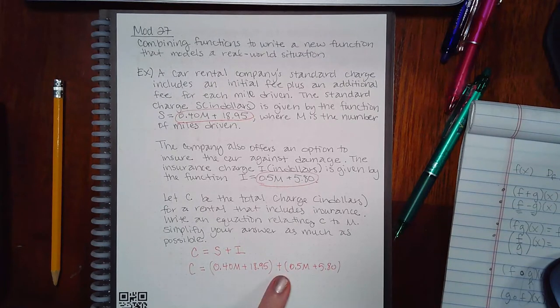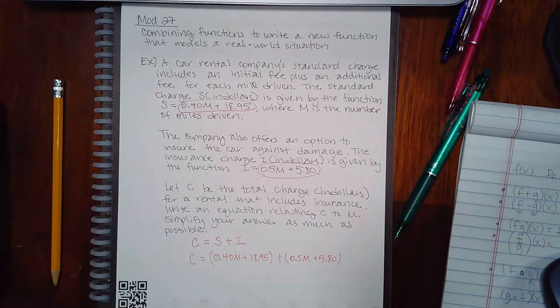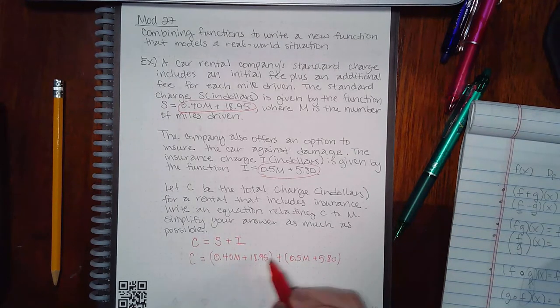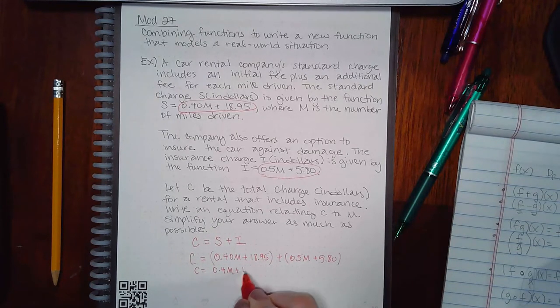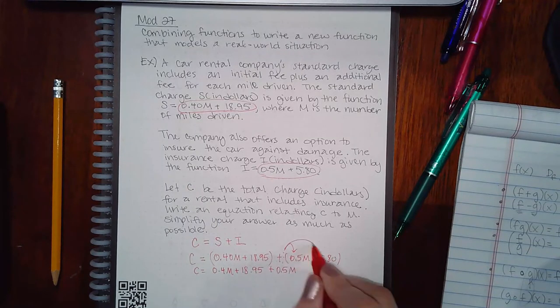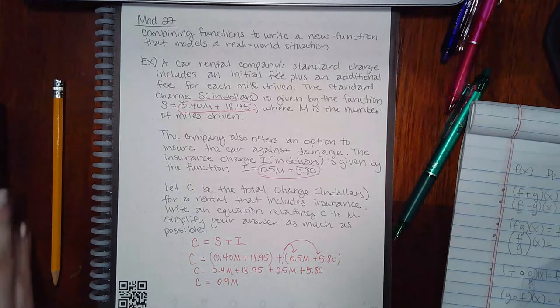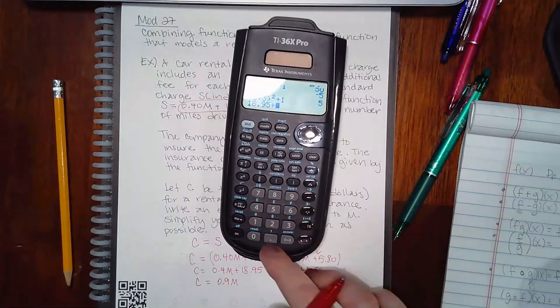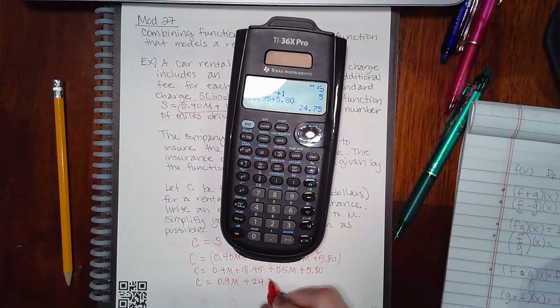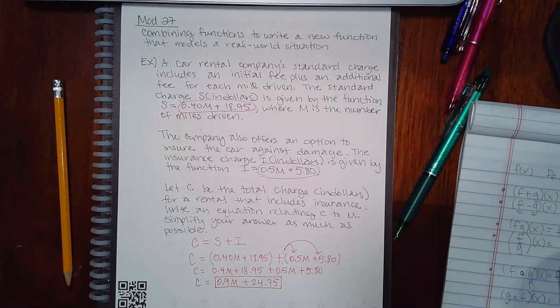Now here, because it's plus, the parentheses may not be necessary. But if this were a minus, it would make a difference whether or not the parentheses are there or not. So just out of habit, when you're plugging in the entire portion, always use parentheses. So here, there's no number to multiply in the front, no exponent to apply. So I don't technically need the parentheses that are in the front. Here, if I multiply by a positive one, that's going to stay a positive 0.5. And if I multiply by a positive 1 here, that's going to stay a positive 0.5 of your 80. So all I'm going to do is simplify my answer as much as possible. So I'm going to combine my like terms. And I don't know what that is. 18.95 plus 5.80, 24.75. So this is the cost, the total cost.